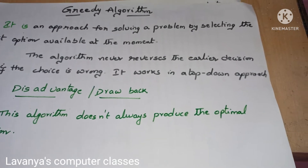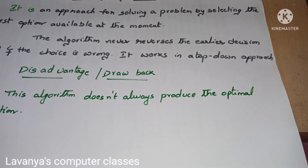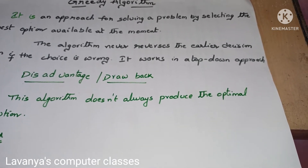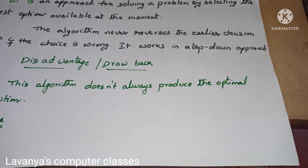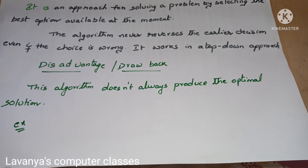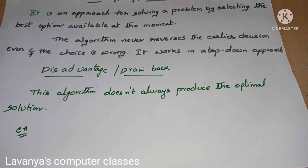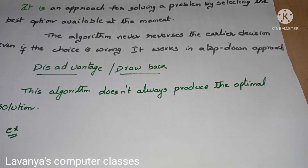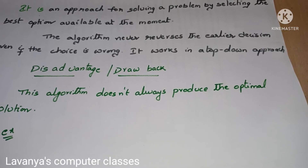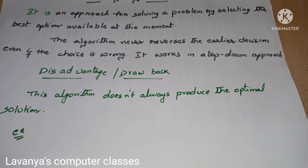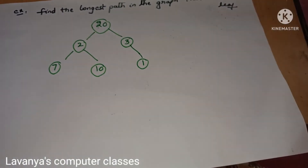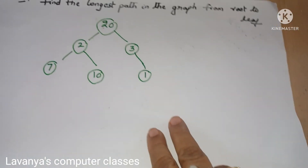The main drawback of greedy algorithm is that it does not always produce the optimal solution. Whatever solution is selected using the greedy method, we cannot guarantee that it is the best solution. At that moment it may be the best solution, but we are not saying it is the best solution out of all possible solutions.